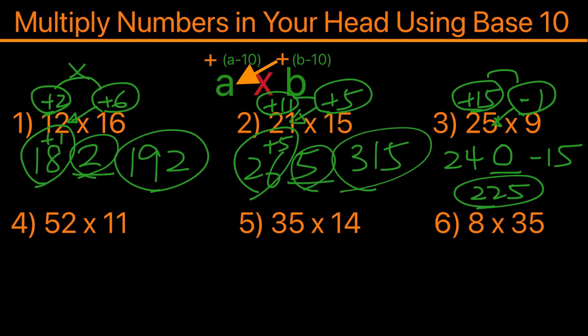Now let's try inputting 25 times 9 in the calculator and you will see the answer does come out to 225.